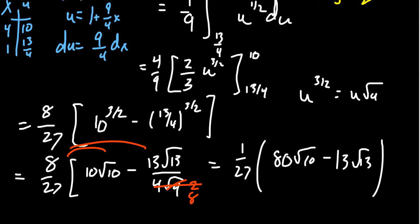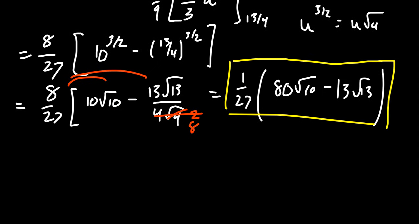And again, you can distribute the 1 over 27 through if you want to. But this gives us the exact answer that we were looking for. And this is an interesting looking irrational number. If we want to know exactly what it adds up to be, we can estimate this using a calculator. And this will be approximately 7.633705.